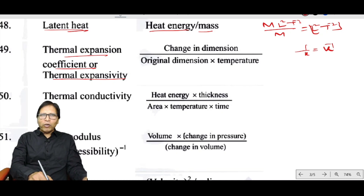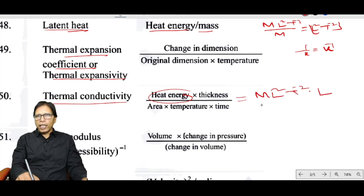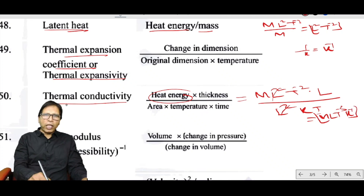Thermal conductivity is heat energy × thickness divided by (area × temperature × time): ML²T⁻² × L ÷ (L² × K × T). Simplifying, the L² cancels, giving the dimension MLT⁻³K⁻¹.